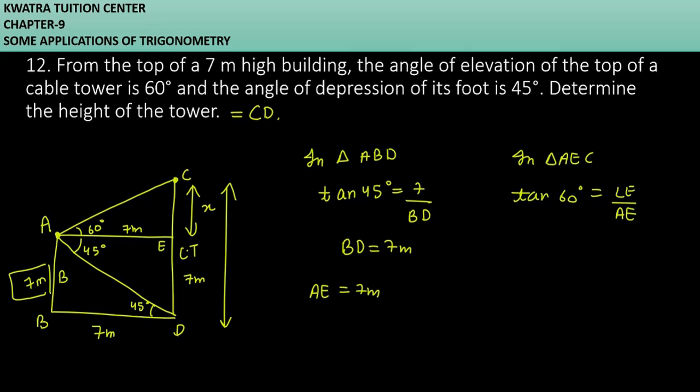Tan 60's value is root 3. CE we don't know, let's take it as X. AE we know is 7. So it will be 7 root 3 meters. So this is your X.